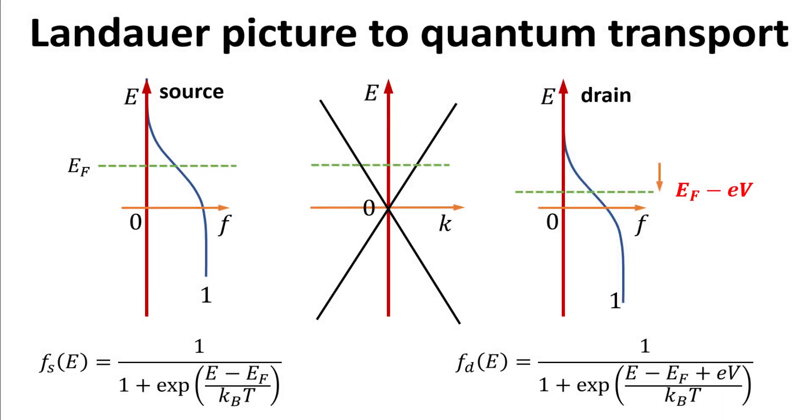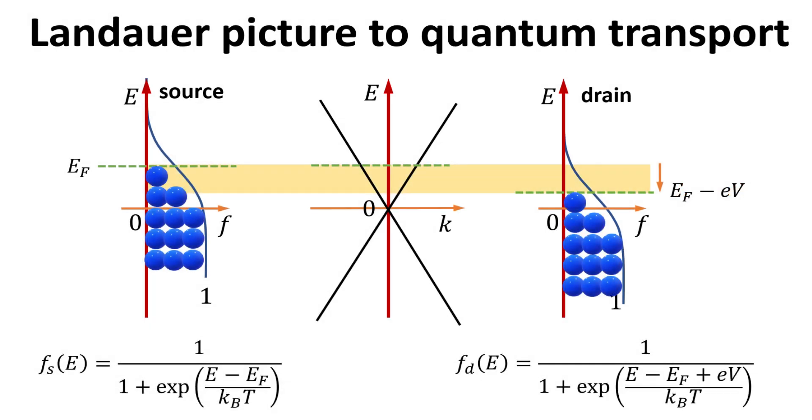Now, we consider an electrical bias V on the right drain contact. A positive voltage V would shift the Fermi level downwards, as depicted. Thus, the source and drain Fermi functions are now no longer identical. Therefore, the applied bias opened an energy window around the Fermi level for electrons to flow, where the difference in the source-drain Fermi functions is finite, as highlighted in yellow.